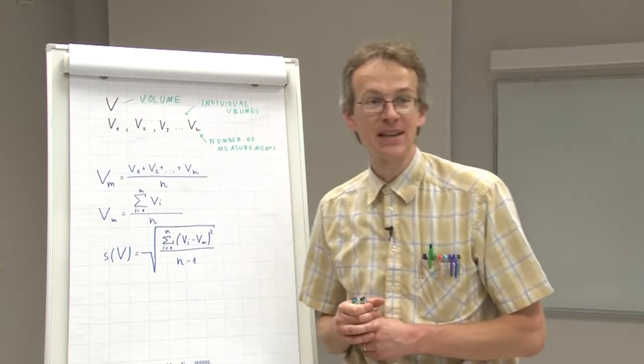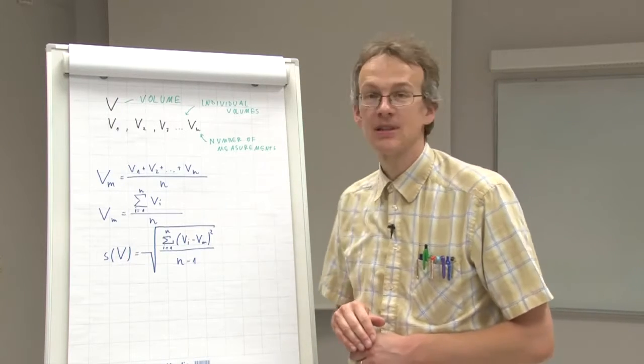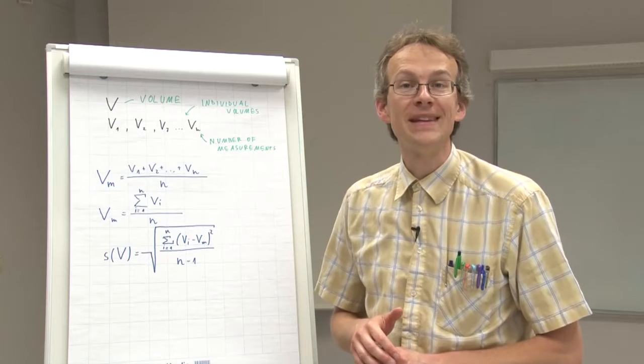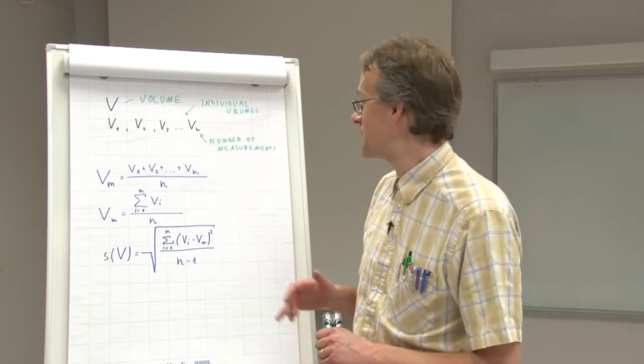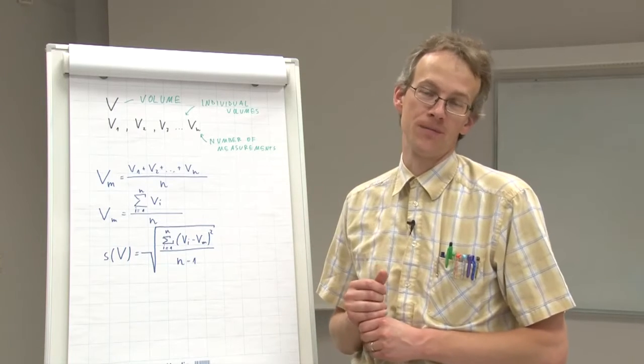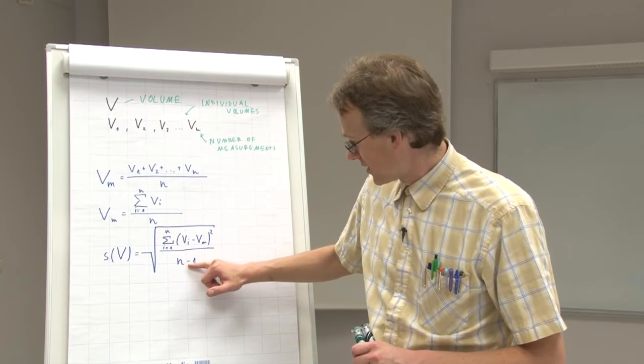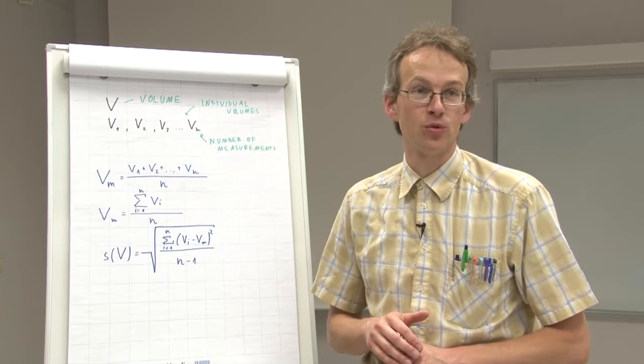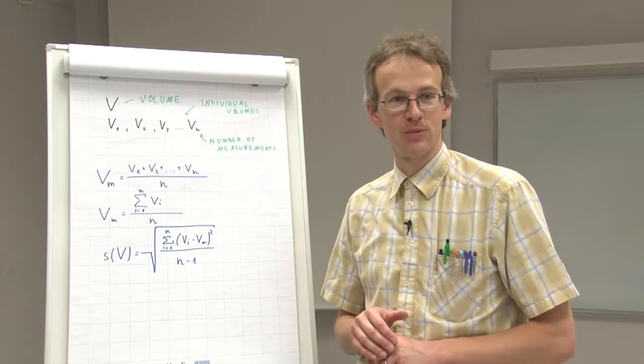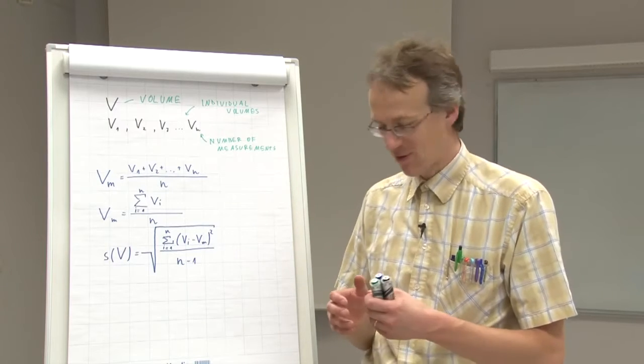Mathematically speaking, standard deviation is something like a root mean square of differences of the individual volumes from the mean volume. And this minus 1 comes from the fact that we do not do infinite number of measurements, but we do a finite number of measurements.